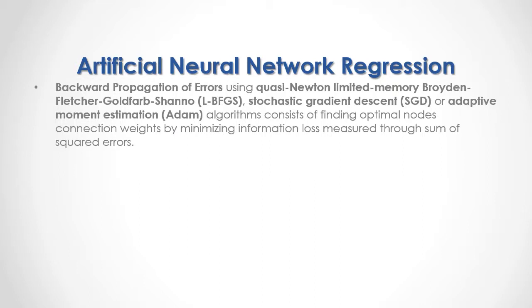Backward propagation of errors using Quasi-Newton, Limited Memory, Broyden-Fletcher-Goldfarb-Shanno, Stochastic Gradient Descent, or Adaptive Moment Estimation (Adam) algorithms consists of finding optimal node connection weights by minimizing information loss measured through sum of squared errors. As a formula, we have the minimization of the sum of squared errors, which equals the sum from the first to the last of the differences between output target data minus output target node prediction, to the power of 2.